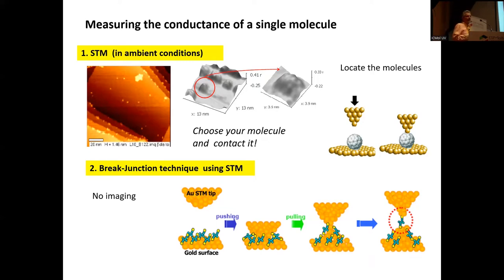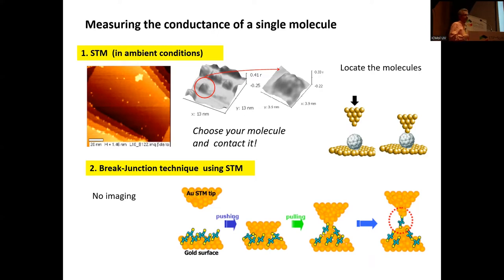The idea is quite simple. There is also another technique called the break junction technique using STM, which is related to what Harry was explaining in the morning. In this case, you don't image the sample — you deposit molecules on it, then go and make a contact and break it. While you are breaking the contact, sometimes a molecule bridges the two electrodes and you measure at that moment.